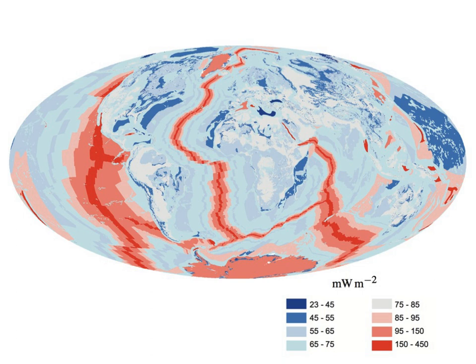Earth's internal heat budget is fundamental to the thermal history of the Earth. The flow of heat from Earth's interior to the surface is estimated at 47 ± 2 terawatts, and comes from two main sources in roughly equal amounts.